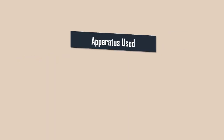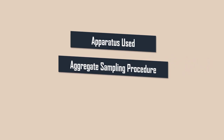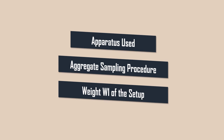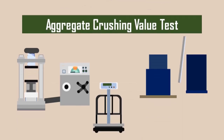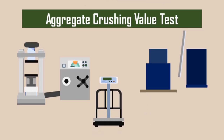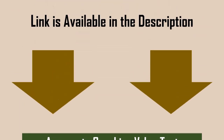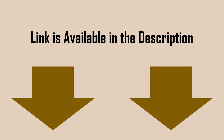The apparatus used, the aggregate sampling procedure, and the weight w1 of the setup in this method is the same as the aggregate crushing test. If you haven't watched that video yet, watch it before proceeding further. The link is available in the description.